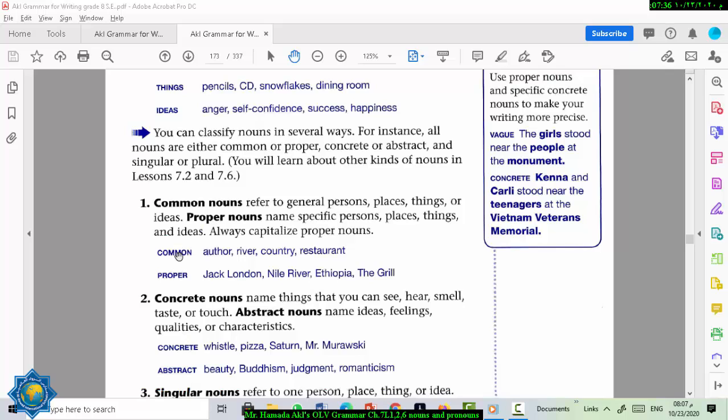Very simple. Common nouns are not specific, like author. But if you specify which author, Jack London, that is proper. River is a common noun. But River Nile, or Nile River, it's a proper noun. Country is common. Ethiopia is proper. Restaurant is common. The name of the restaurant, the specific name of the restaurant, that is proper.